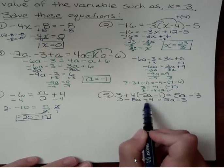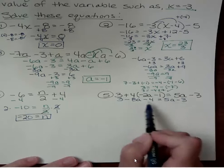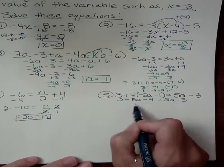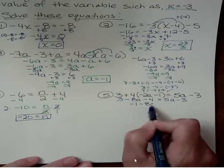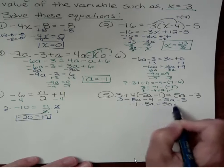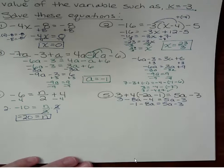So you can still simplify the left. If I have 3 and I subtract 4, remember, take the sign in front of the number. 3 and subtracting 4 gives me negative 1. I still have the negative 8a term.